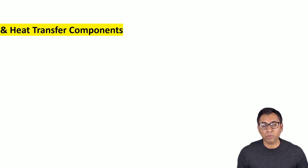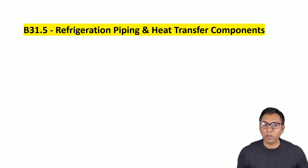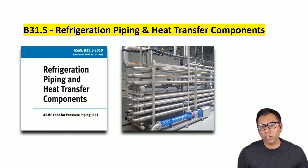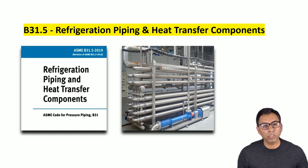The next chapter is B31.5, which covers Refrigeration Piping and Heat Transfer Components, including secondary coolant piping for temperatures as low as minus 196 degrees Centigrade, whether erected on the premises or factory assembled.